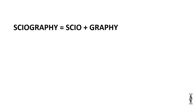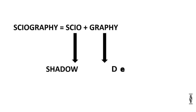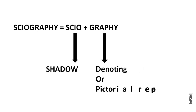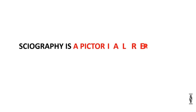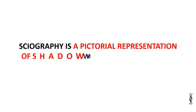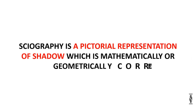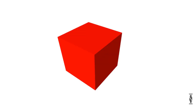The word sciography is a combination of two words: scio and graphi. Scio is a Latin word which means shadow, and graphi is an English word which means denoting or pictorial representation of anything. So we can say that sciography is a pictorial representation of shadow which is mathematically or geometrically correct.